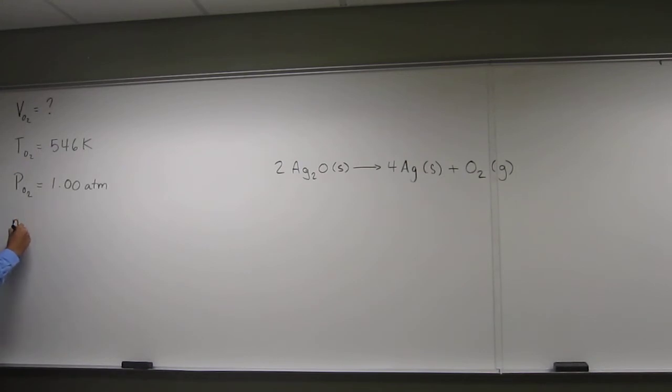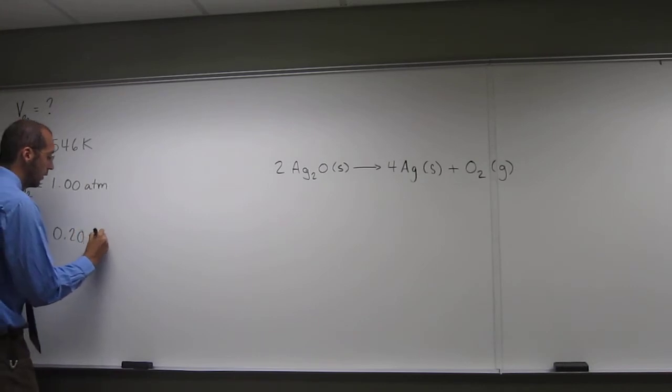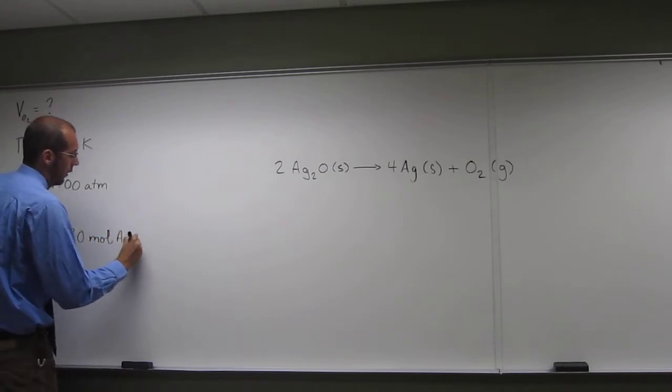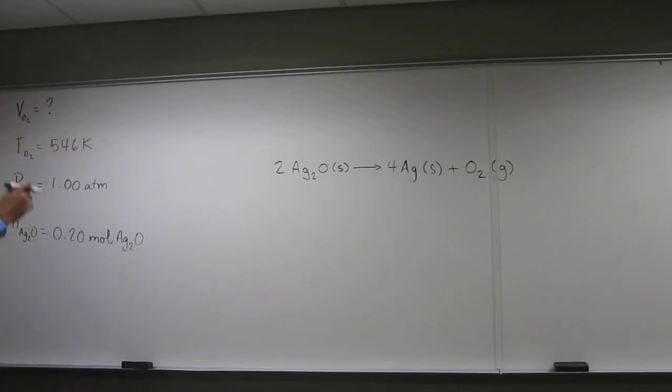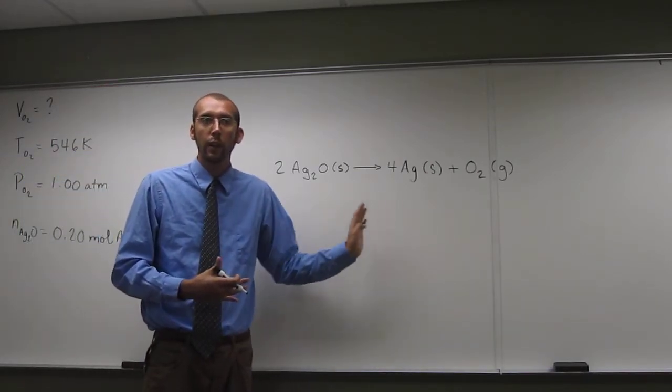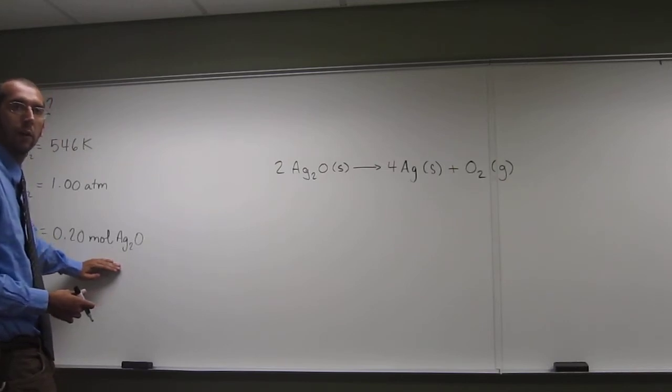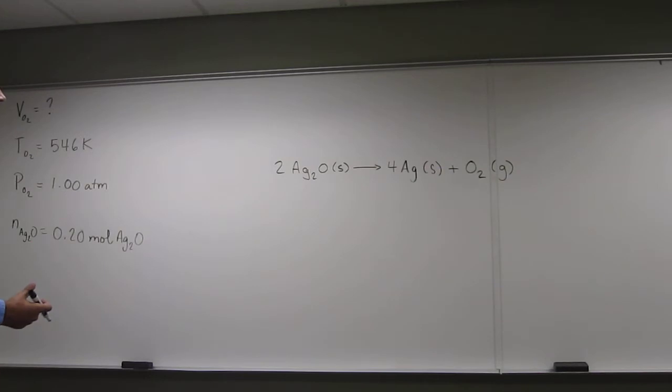By the dissociation of 0.2 moles of Ag2O, or silver 2 oxide. So, the number of moles of Ag2O is 0.20. That's all fine and good, but it doesn't tell you anything about the number of moles of oxygen, right? So, we need to use the stoichiometric relationship that we've developed from the balanced chemical equation to figure out how many moles of oxygen we actually have in this reaction.